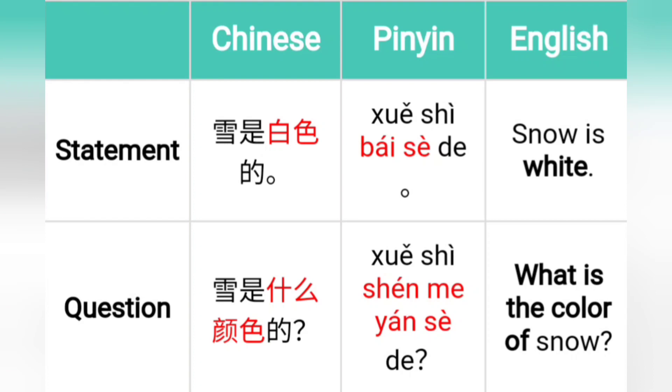If you want to ask for specific information, like 'what is the color of the snow?', you would ask that question, and the answer would be 'the snow is white.'